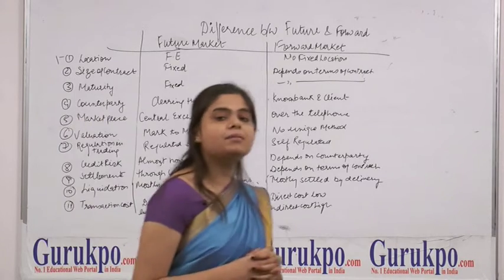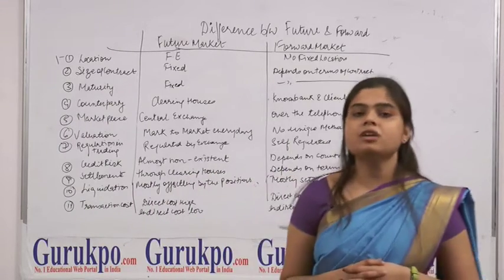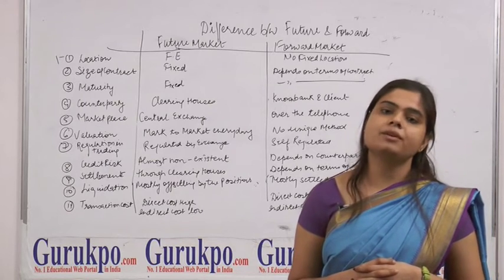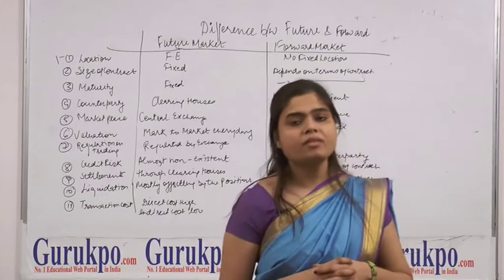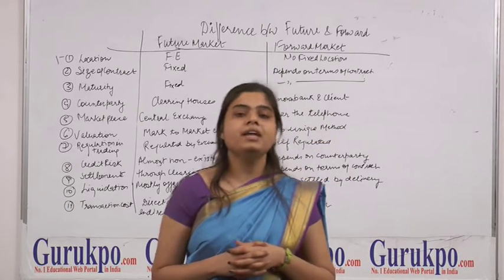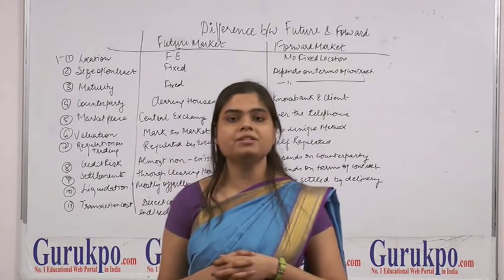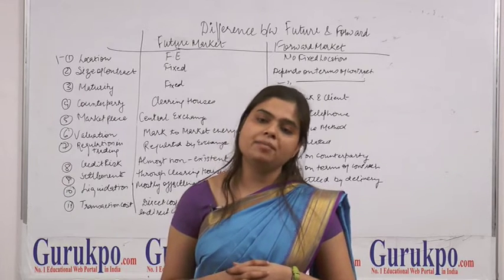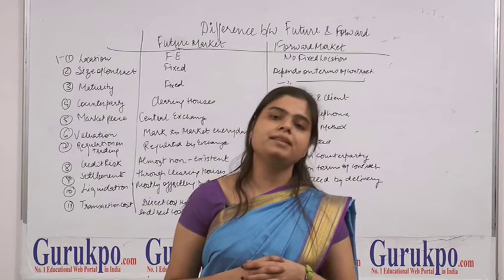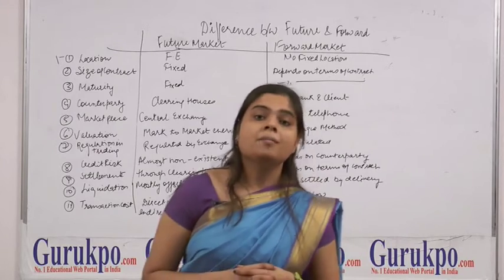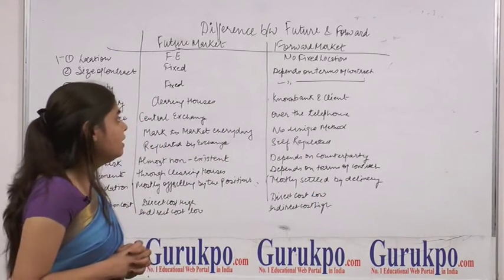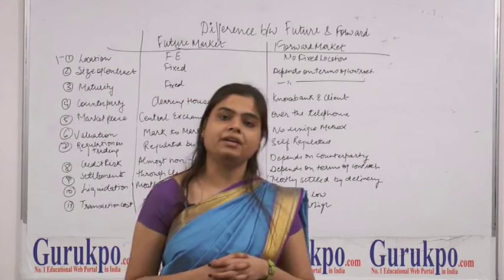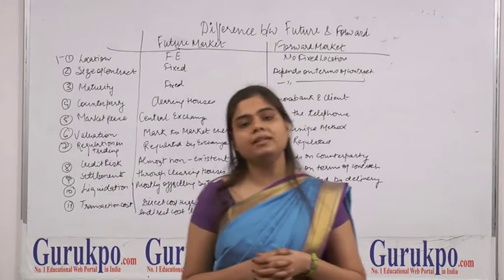The next difference is counterparty. In the futures market, clearing houses play the role of counterparty. Clearing houses are institutions that clear all transactions of the futures exchanges — they may be part of the exchange or a separate entity. In the forward market, this role is played by a bank or client; the counterparty may be banks or clients.